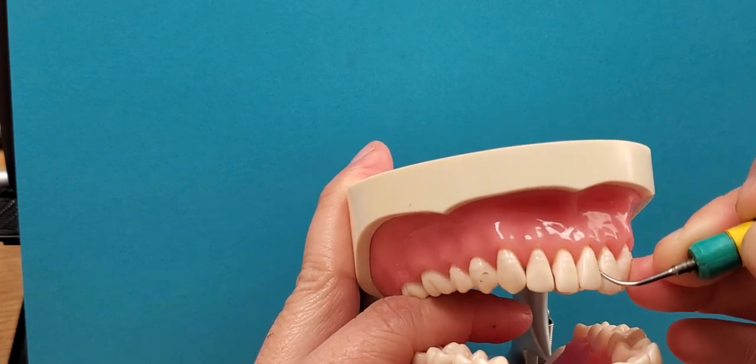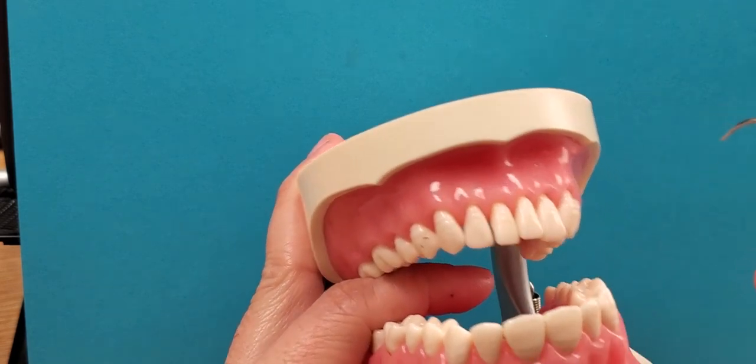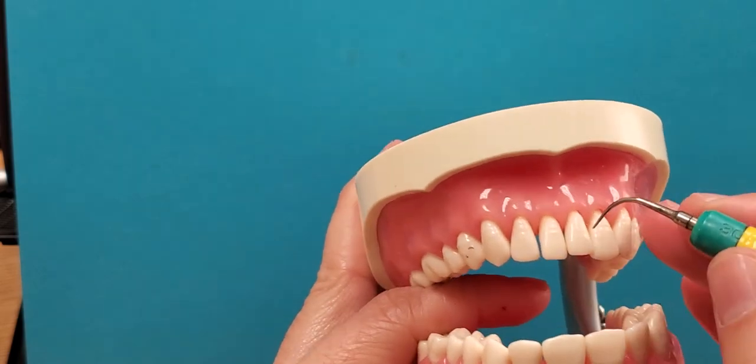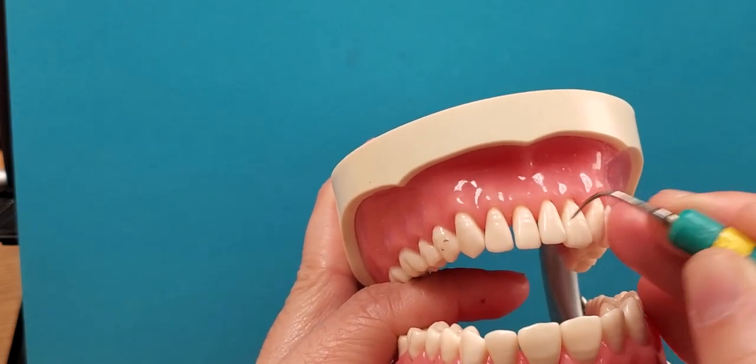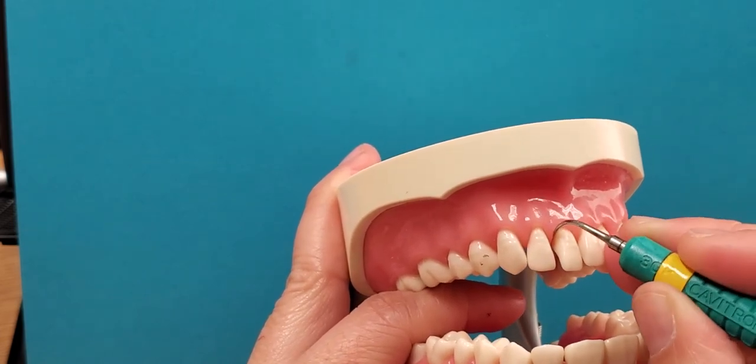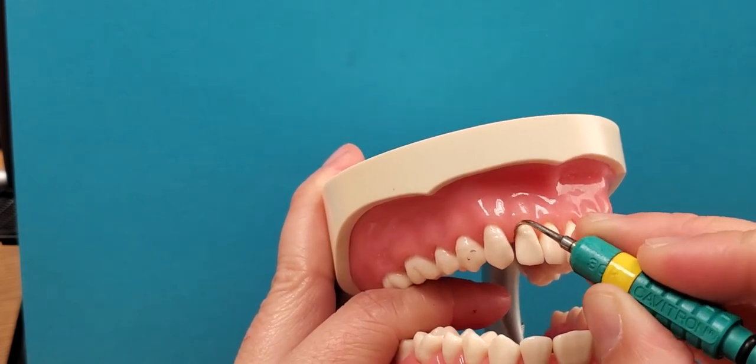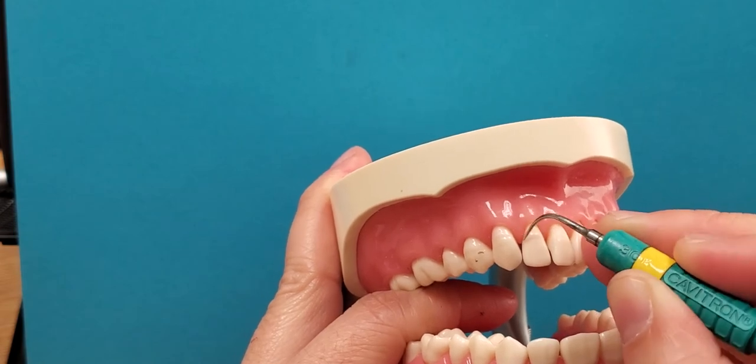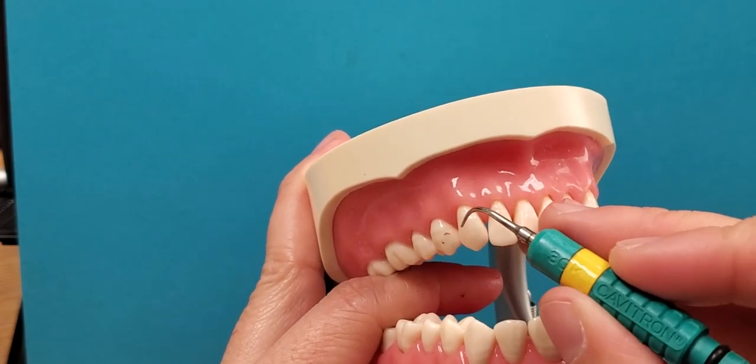And then once you're finished with probe style in that sextant, then come back and do your curette instrumentation in places that you might need to remove calculus up underneath the contact and on the line angles, very helpful for those places.